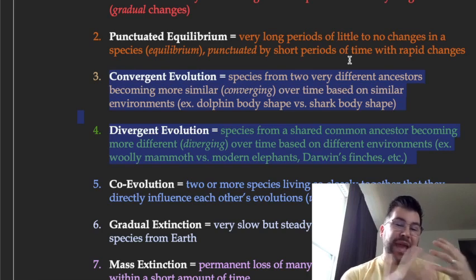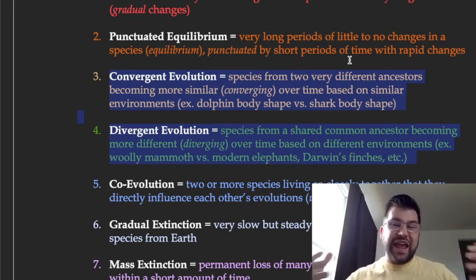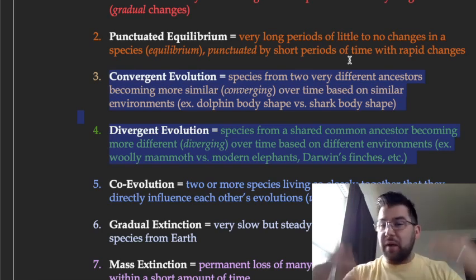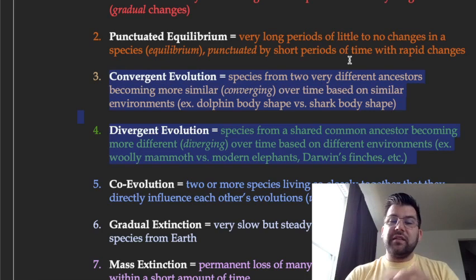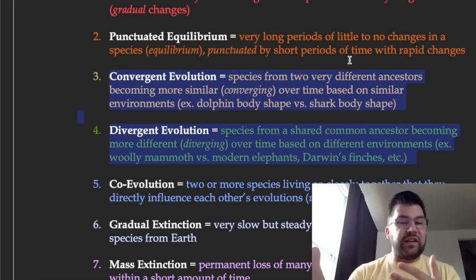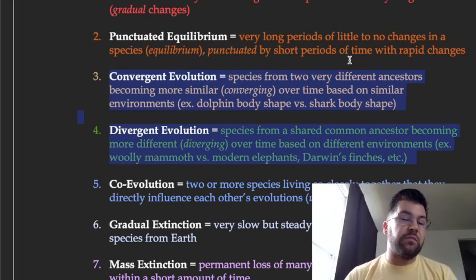Think of a dolphin, which is a mammal, and a shark, which is a fish. They have very different ancestors, but over time, given similar environments and having to be top predators in those environments, they were favored to have similar body shapes. A dolphin's body looks a lot like a shark's body. So over time, they've gone through convergent evolution. They've become more similar.